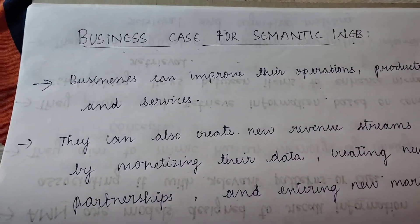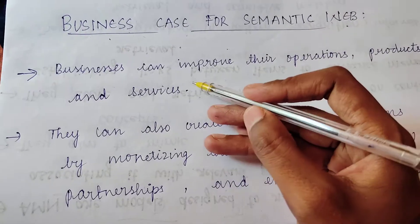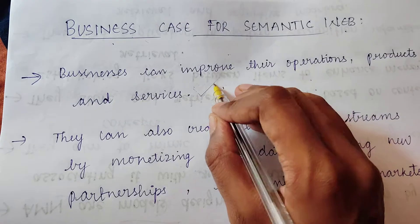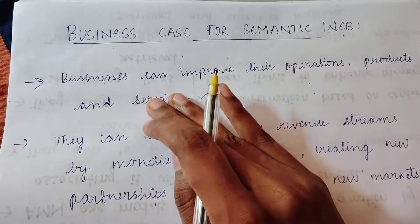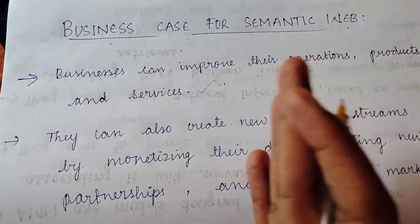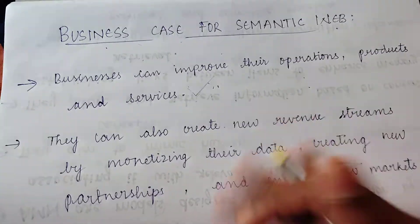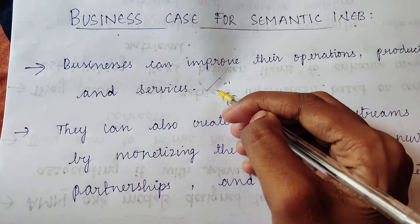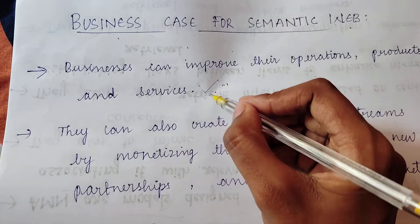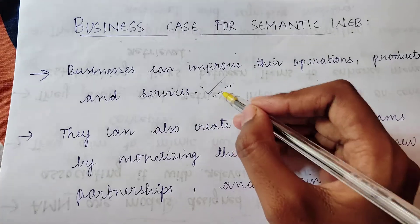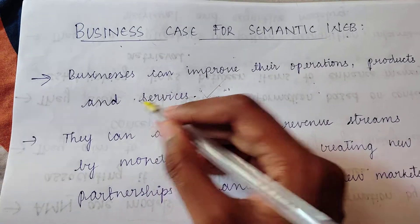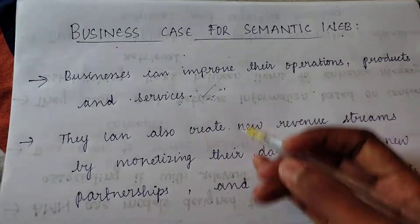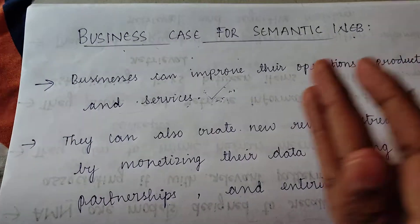Now let's go with the definition. The business case for Semantic Web is simple: by using Semantic Web technologies, businesses can improve their operations, their web technologies, their products, and their services.